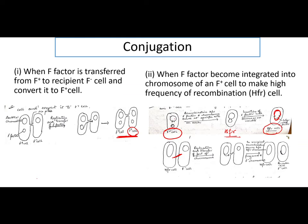During replication, as the plasmid DNA replicates, along with it some bacterial DNA also replicates and gets introduced into the neighboring bacteria. So the plasmid DNA is transferred there, and along with that, a few genes from the bacterial DNA — which had incorporated the plasmid DNA — also replicate and get introduced into the second cell. Now your second bacteria, which was earlier F negative, is F positive but it is recombinant F positive, because it contains some genes transferred from the first cell.